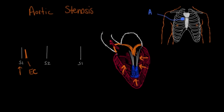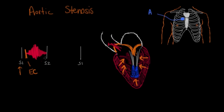When the valve first opens, you get a little bit of blood flow through it. As the heart continues to contract more and more forcefully, you get more and more flow. Then eventually as the heart starts to relax, you get less and less flow. So the shape of this murmur is that as it contracts more forcefully you get more intense murmur, and as the ventricle starts relaxing it becomes less intense. We call this a crescendo-decrescendo murmur. You'll also hear people refer to this as a diamond-shaped murmur, and you can kind of see that shape if you were to outline it.